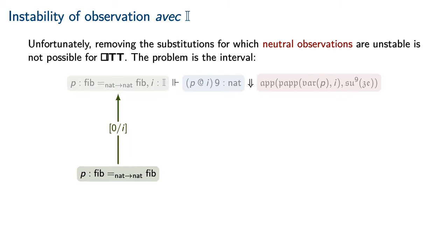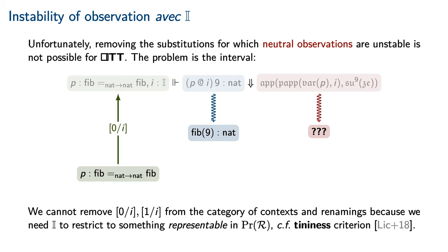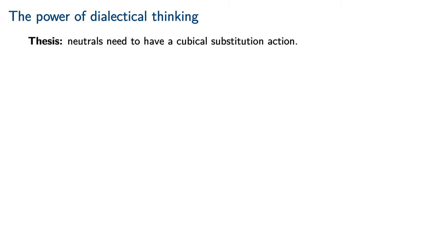We apply the variable P to the variable i and apply that to the 9th natural number. Consider restricting this observation along the substitution that replaces the variable i with the endpoint 0. Under this substitution, the term P at i applied to 9 becomes the term denoting the 9th Fibonacci number. However, without executing an entirely new normalization problem, it is not clear how to restrict our neutral form above to a normal form for the 9th Fibonacci number. Previously, we resolved this problem by simply removing the offending substitution. Unfortunately, we cannot remove the 0 for i and 1 for i substitutions from the category of contexts and renamings, because ultimately we will need the interval to restrict to something representable in presheaves on the category of contexts and renamings. We therefore seem to have arrived at a contradiction.